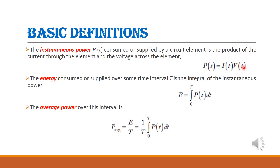Then next, energy. Energy is the time integral of the instantaneous power. If we take time integration of instantaneous power, then it is called energy. Then average power is given by energy divided by time, that is (1/T) × integral from 0 to T of P(t) dt.